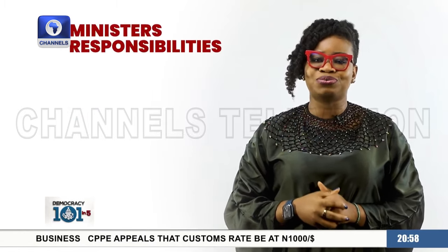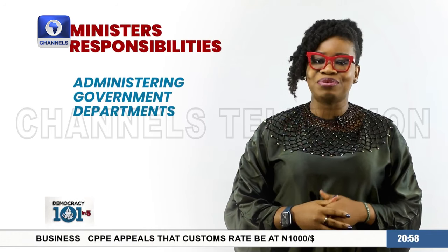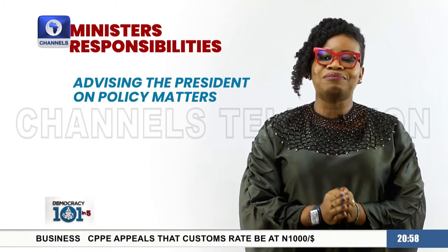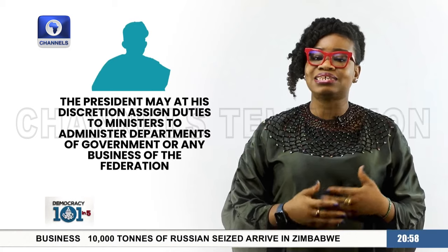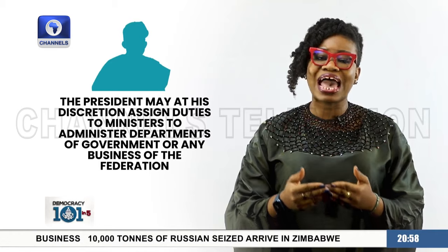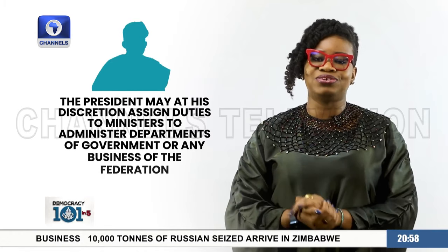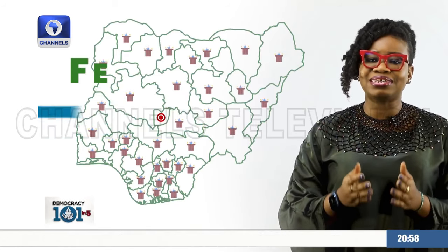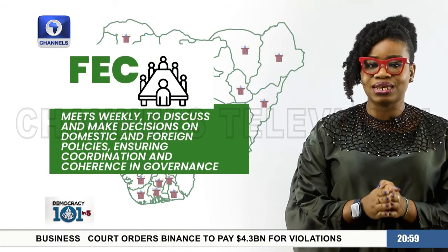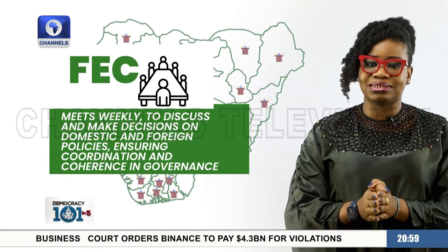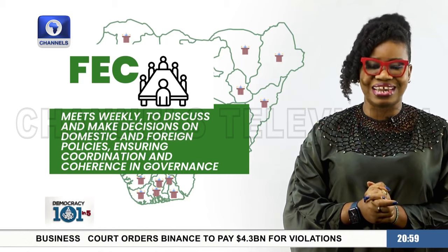Ministers have a wide range of duties, from administering government departments to advising the President on policy matters. The President may, at his discretion, assign duties to Ministers to administer departments of government or any business of the Federation. Currently, Nigeria has 48 Ministers. The Federal Executive Council meets weekly to discuss and make decisions on domestic and foreign policies, ensuring coordination and coherence in governance.